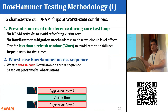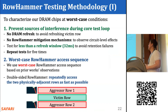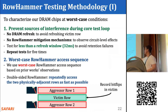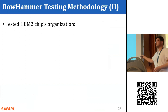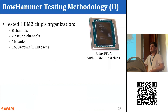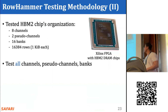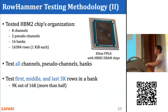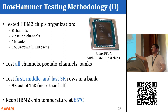We use the rigorous RowHammer characterization methodology described in prior work, and we use the worst-case double-sided RowHammer access pattern, recording bit flips in the sandwich victim row. Our HBM2 chip contains eight channels, two pseudo-channels in each channel, 16 banks in each pseudo-channel, and 16,001 kilobyte-sized rows in each bank. We test all channels, pseudo-channels, and banks, and test the first, middle, and last 3,000 rows in a bank. We keep the HBM2 chip's temperature at 85 degrees Celsius.